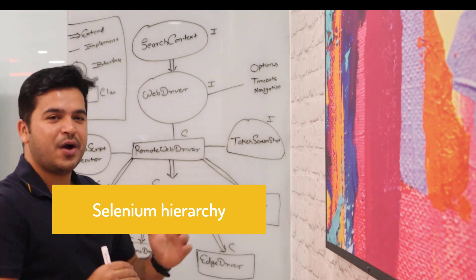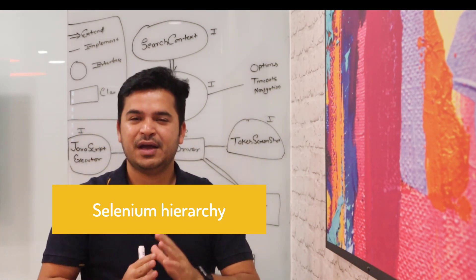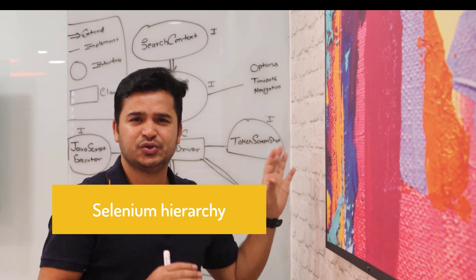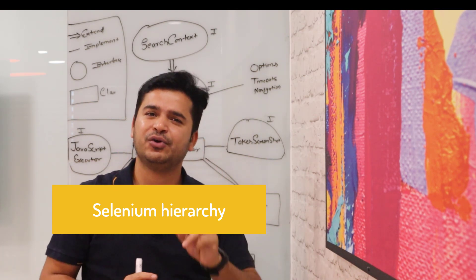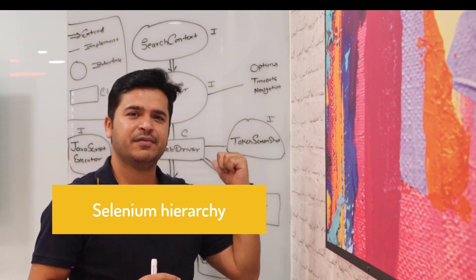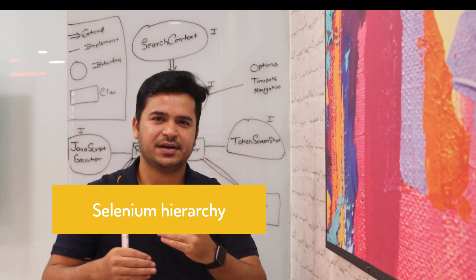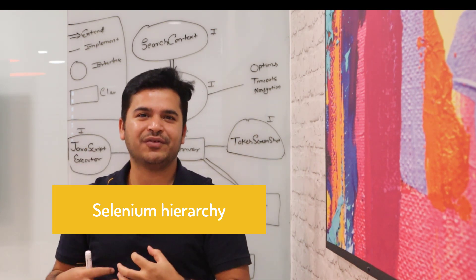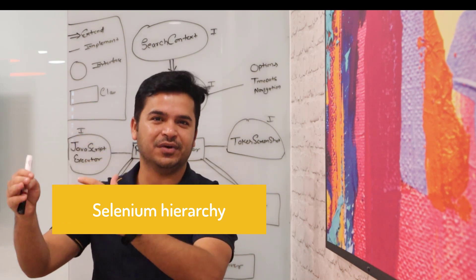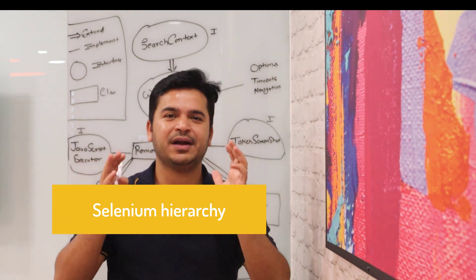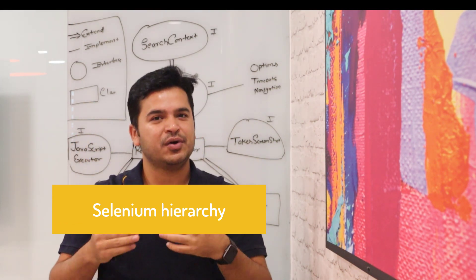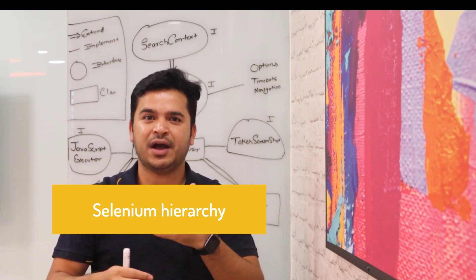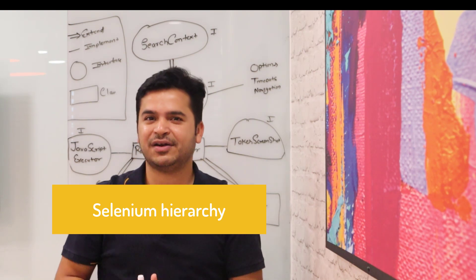If you are able to explain the same hierarchy in an interview, it gives a very good impression in front of the interviewer that you know things internally. And if you're not able to explain this hierarchy, they will understand that you know how things work but you don't know how internally these things are connected. So let me show you how you can explain this in an interview, and if you explain this way, trust me, it will create a very good impression. I will divide this video into two parts: first part on the board showing how these classes and interfaces are linked, and in the second part I will open the source code of Selenium to show how exactly it works.